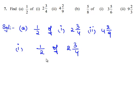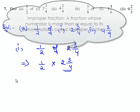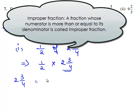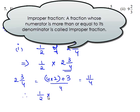1/2 of 2¾ is nothing but 1/2 multiplied by 2¾. Since 2¾ is in the form of a mixed fraction, let us first convert it into an improper fraction. So 2¾ can be written as (4 × 2 + 3) divided by 4, which equals 8 + 3 = 11. So this is equal to 11/4. Therefore the expression becomes 1/2 × 11/4, and multiplying numerators and denominators gives 11/8. Therefore 1/2 of 2¾ is equal to 11/8.